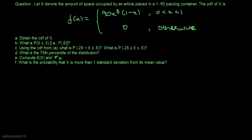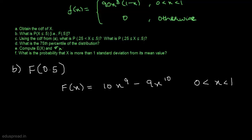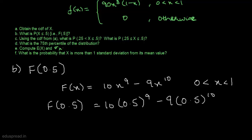In part B we have to find the probability that x is less than or equal to 0.5, which means we have to find F of 0.5. We know that F of x equals 10x raised to the power 9 minus 9x raised to the power 10 for values of x between 0 and 1. So F of 0.5 equals 10 times 0.5 raised to the power 9 minus 9 times 0.5 raised to the power 10, and solving this we get 0.010742. This is all about part B.